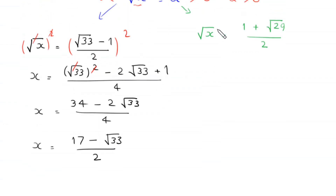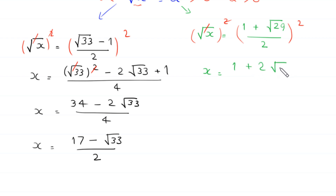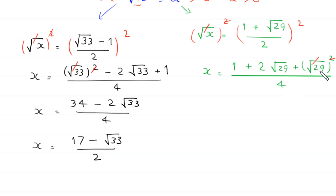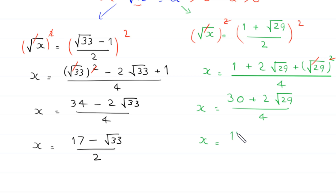When a equals (1 plus root 29) divided by 2, squaring both sides gives x equals (1 plus root 29) squared divided by 4, which expands to (1 plus 2 root 29 plus 29) divided by 4, giving (30 plus 2 root 29) divided by 4. Simplifying, x equals (15 plus root 29) divided by 2.